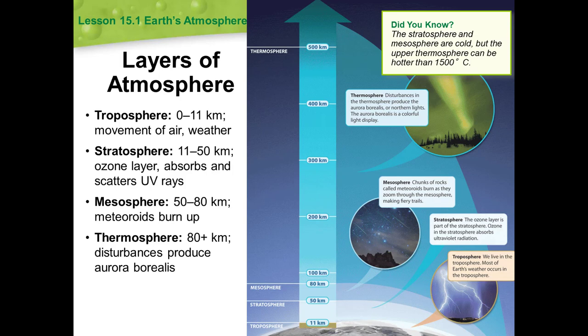In the stratosphere, ozone occurs naturally and is beneficial because it filters out UV light. However, in the lower levels of the troposphere, ozone does not naturally occur. In the troposphere, ozone is considered a pollutant — it is harmful to living tissues, including lung tissue, and can interfere with plant growth.